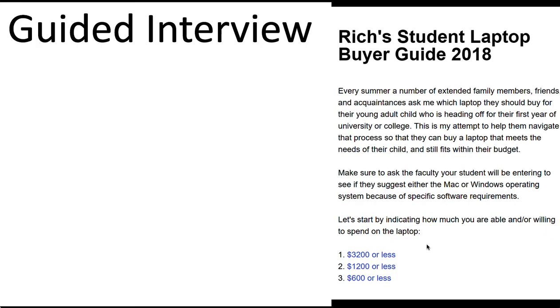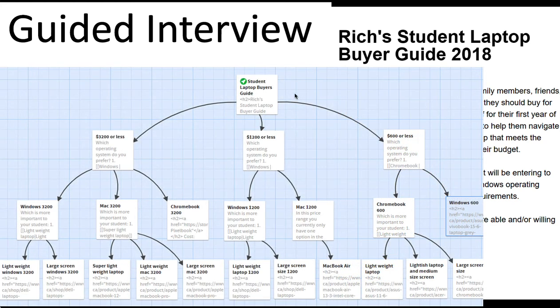You could also do guided interviews. This was from a few years ago, and it was to help people figure out what type of laptop they should buy. Here's what the editor interface looks like. The first question is about budget, the next is about preference for operating system — Windows, Mac, or Chrome — and the last option is whether weight or screen size is more important to you. Then it'll give you some suggestions on what would be a good laptop choice.